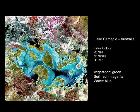Here we have another false colour image that emphasises the contrast between exposed soil — displayed as red or magenta — and actively growing vegetation, which is displayed as green, as you would expect, and also very blue and vibrant water.